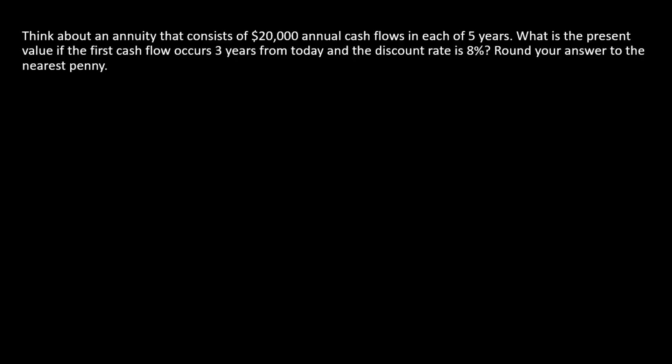Here we have an annuity, a five-year annuity with a payment of $20,000. So we have a series of five $20,000 payments. The catch on this problem is the first payment occurs three years from today.